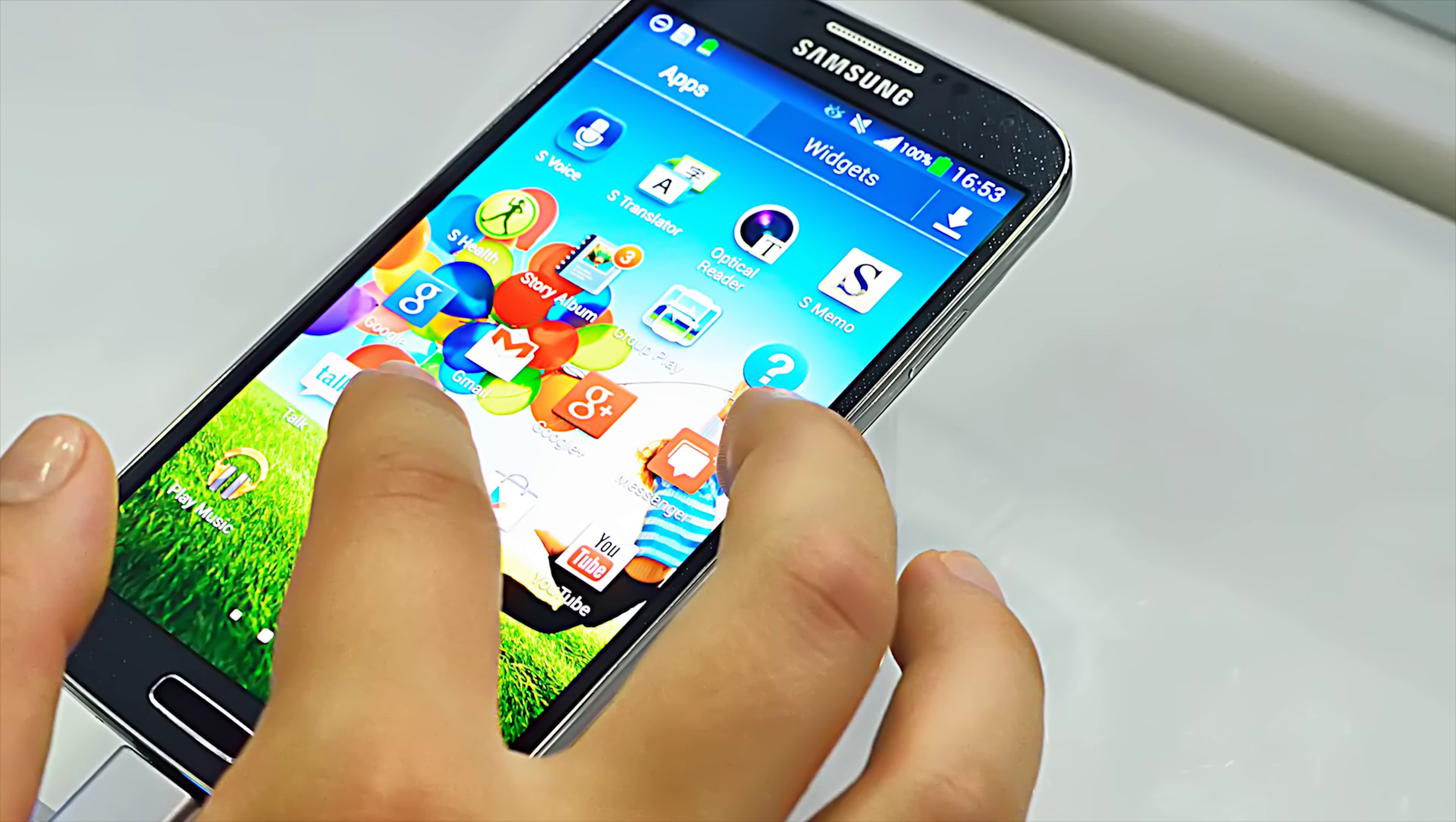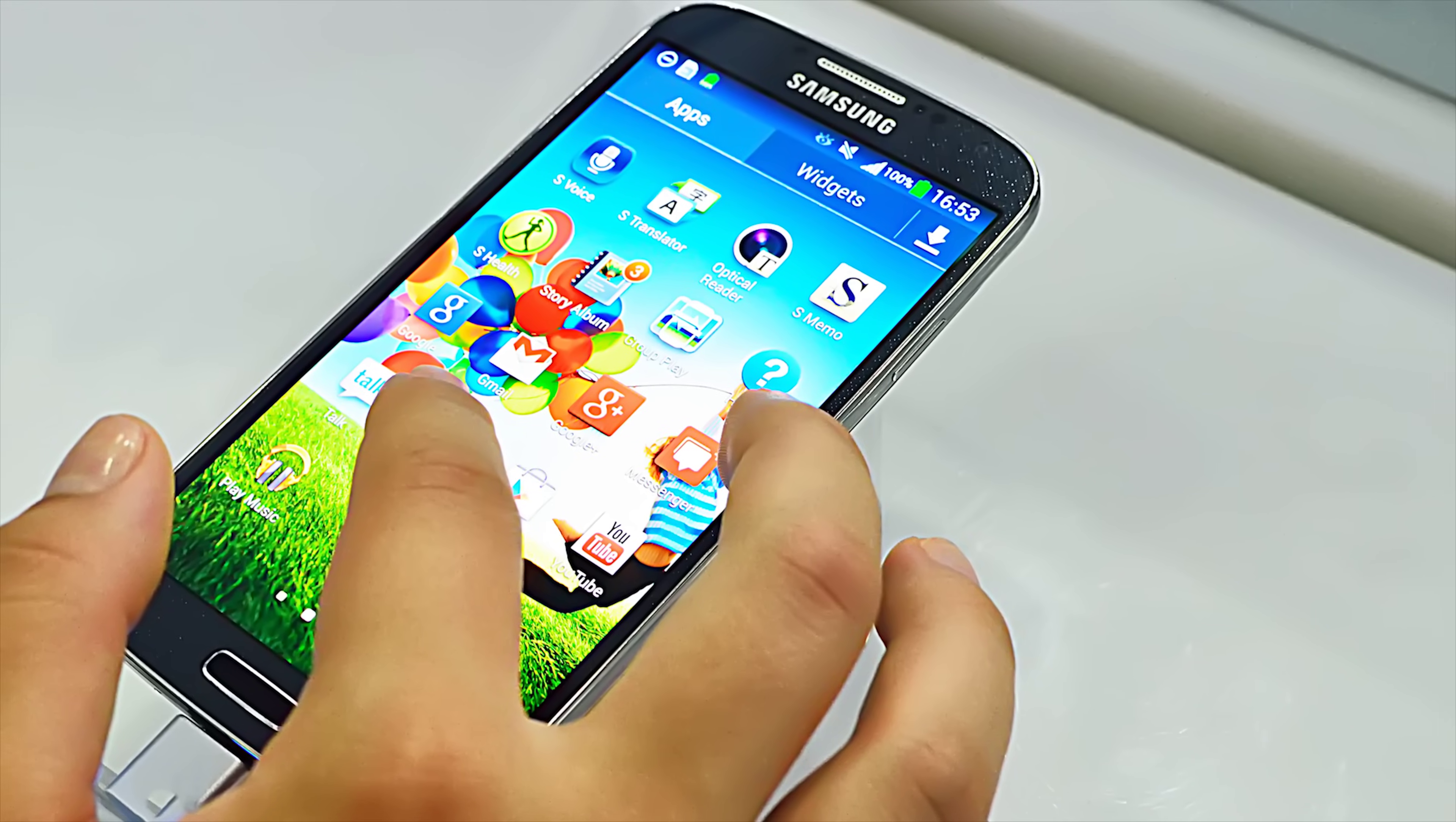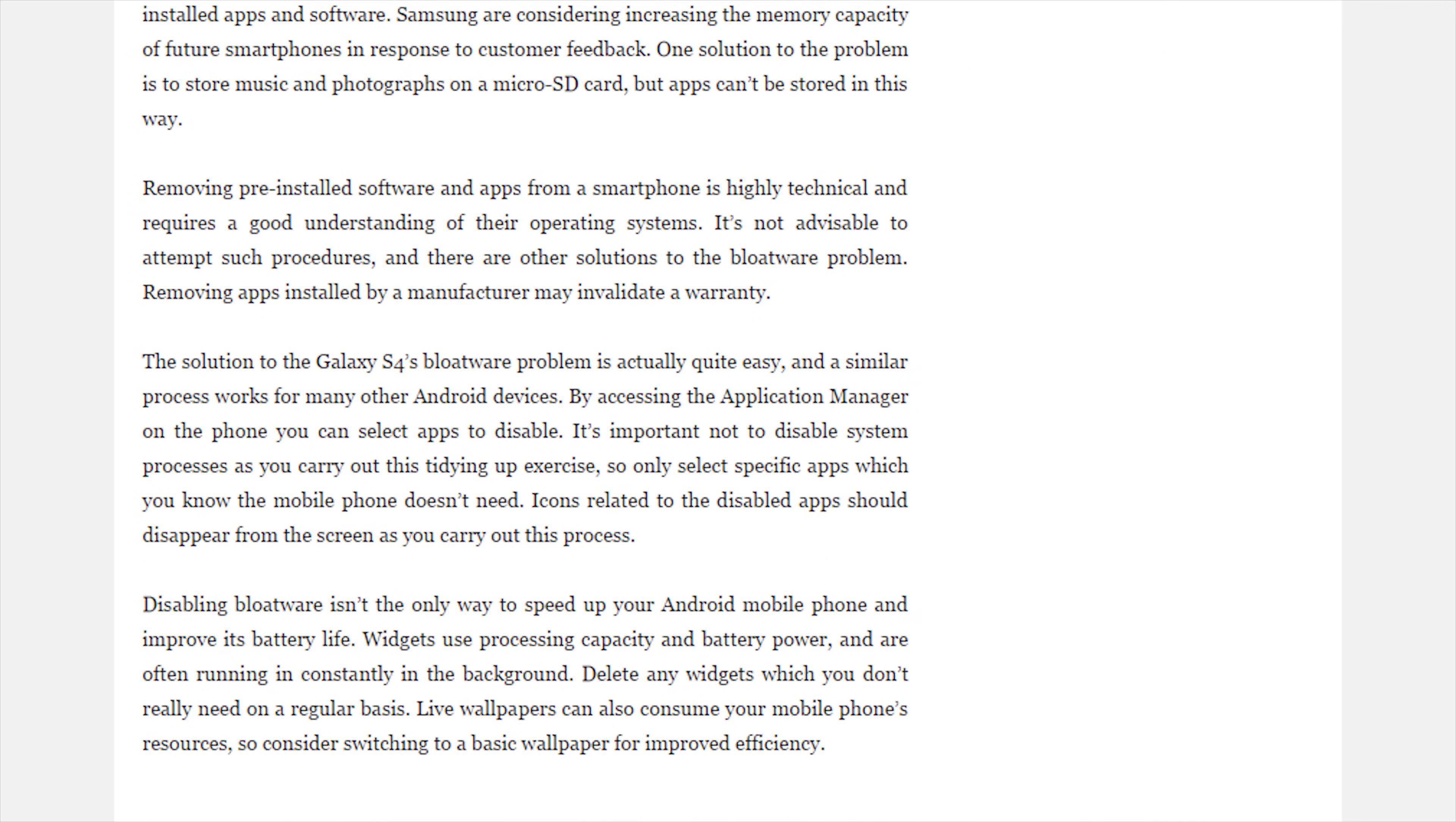So how do you get bloatware and crapware? Well, as mentioned before, a lot of bloatware comes pre-installed on your PC, and actually, the same goes even for mobile devices. The Samsung Galaxy S4 was particularly notorious for shipping with excessive bloatware with about 7GB of the capacity of the 16GB model taken up by pre-installed apps and software that you couldn't remove without a pretty solid understanding of how Android works. Yikes.